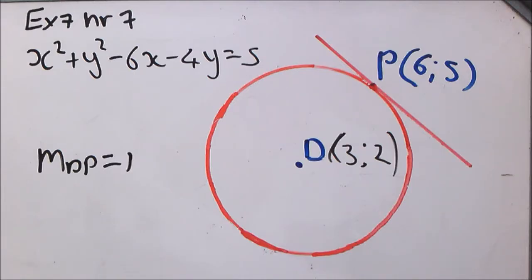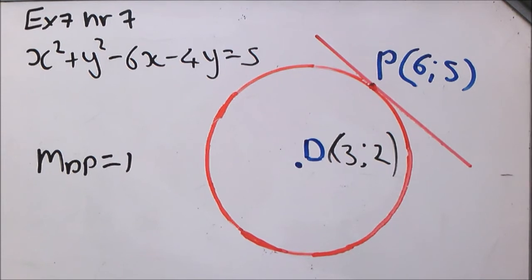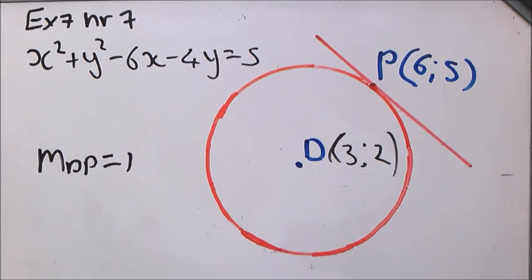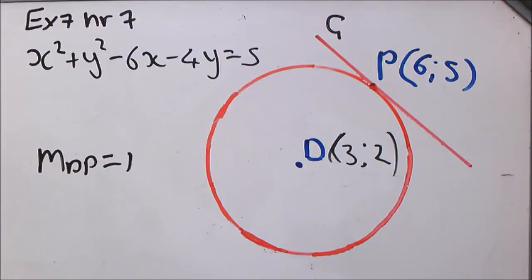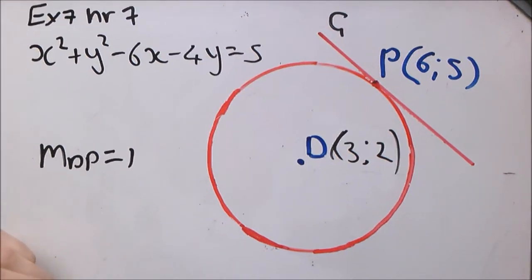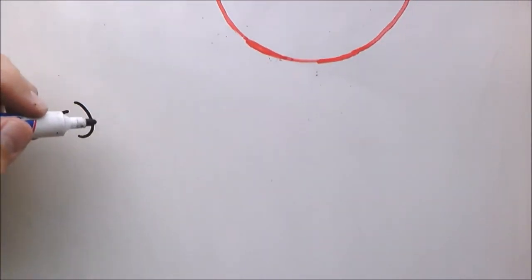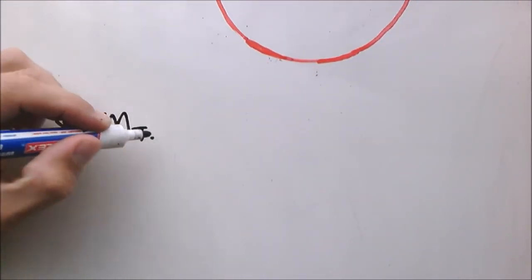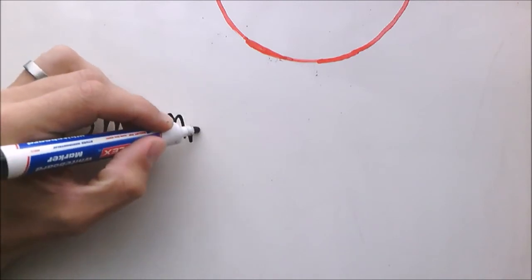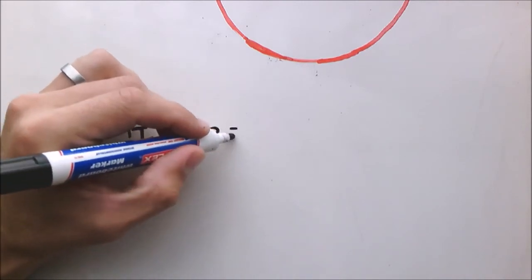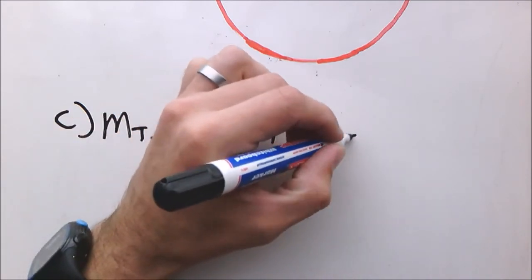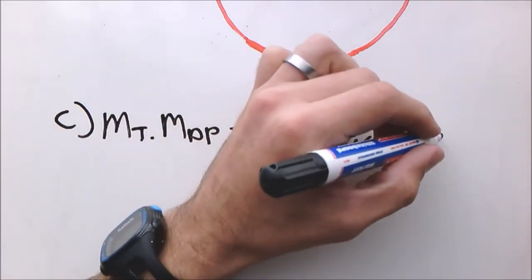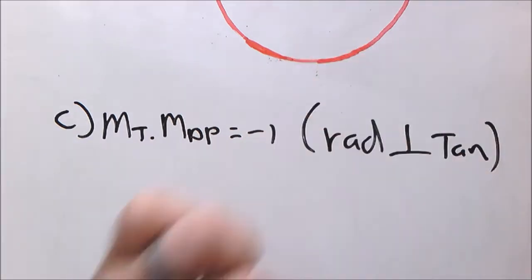Now question C, the final question, is to determine the equation of the tangent. So first things first, let's get the gradient of the tangent. The gradient of the tangent times the gradient of DP equals negative 1. Our reason: the radius perpendicular to tangent.